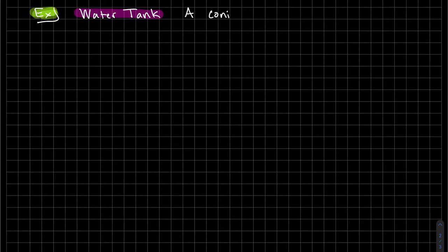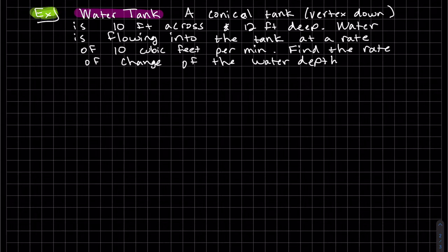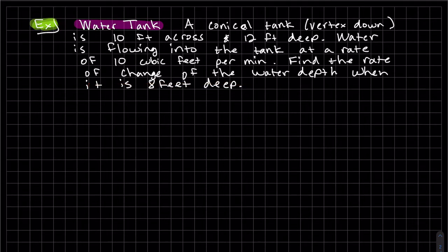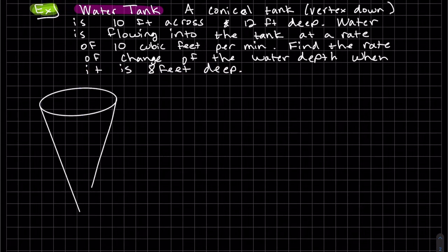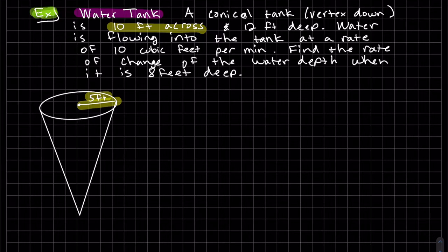The next example is a popular one: a conical water tank with its vertex pointing down. It's 10 feet across at the top and 12 feet deep. Water flows in at a rate of 10 cubic feet per minute. We need to find the rate of change of the water depth when it's 8 feet deep. Let's draw the tank — vertex down, so the radius at the top is 5 feet and it's 12 feet deep.